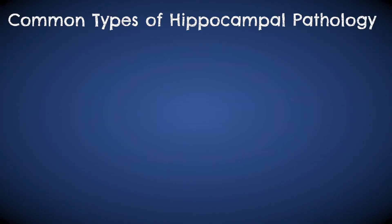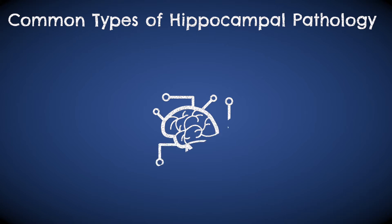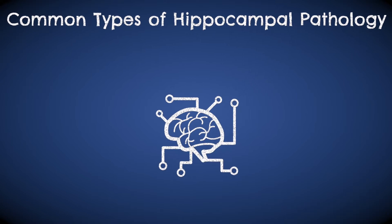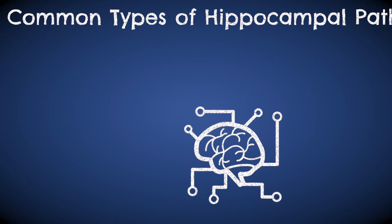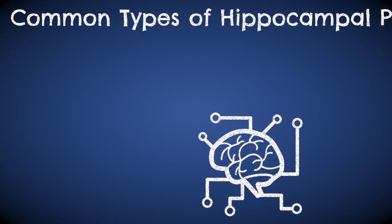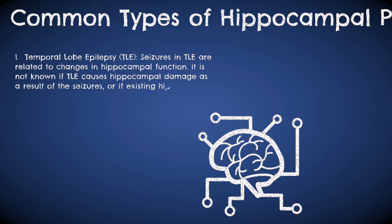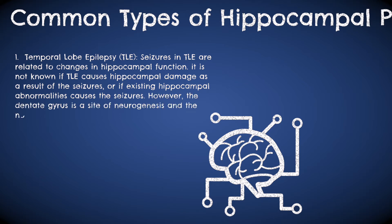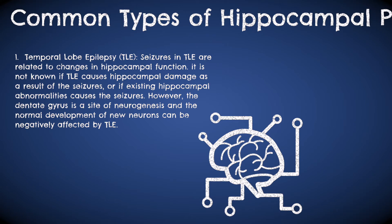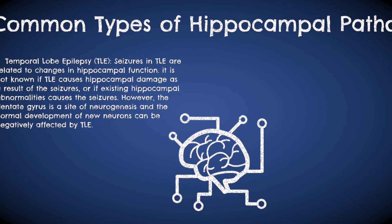Now that we've looked at key anatomy of the hippocampus, let's relate this to clinical practice. Firstly, let's mention TLE — temporal lobe epilepsy. TLE seizures relate to changes in hippocampal function. Whether TLE causes hippocampal damage is unknown; however, what is known is that the dentate gyrus is involved in neurogenesis and that TLE can negatively affect new neuron development.